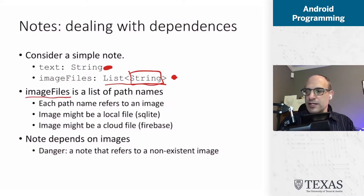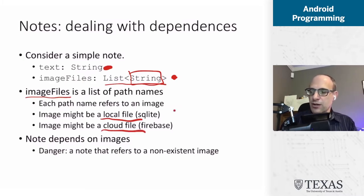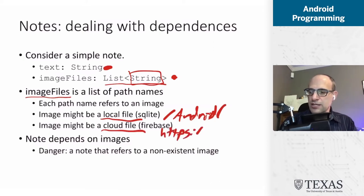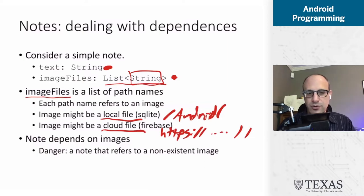The image file list identifies a bunch of images. In the SQLite case, that's going to be a local file. In the Firebase case, that's a cloud file. A local file is identified by a local file name — like an Android file path. A cloud file is identified by a URL. So both have path name components, but with a different meaning: one is a local file, one is a cloud file.